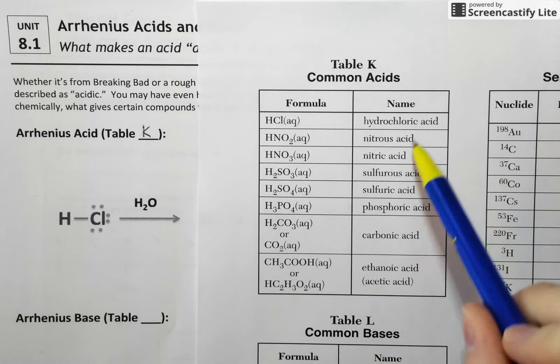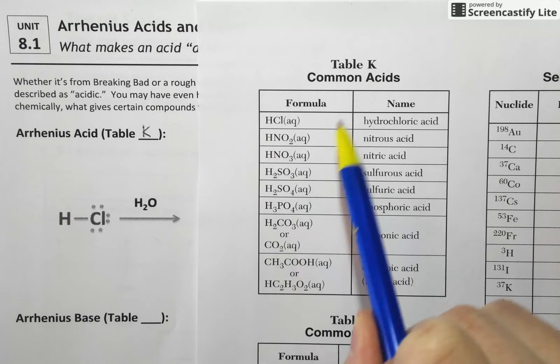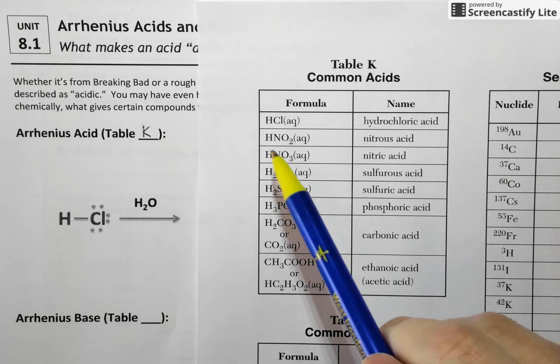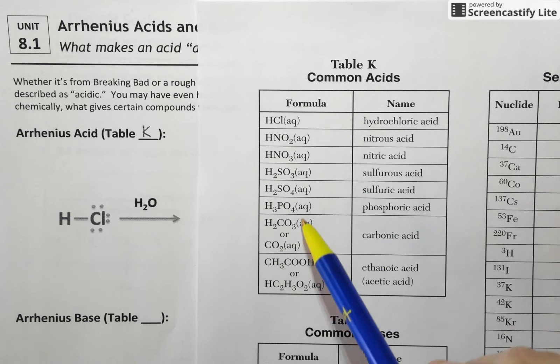And what you may notice about all these acids listed on table K, they're all fairly simple in name, all in an acid, and then give you some sort of description about what types of elements are involved in them.